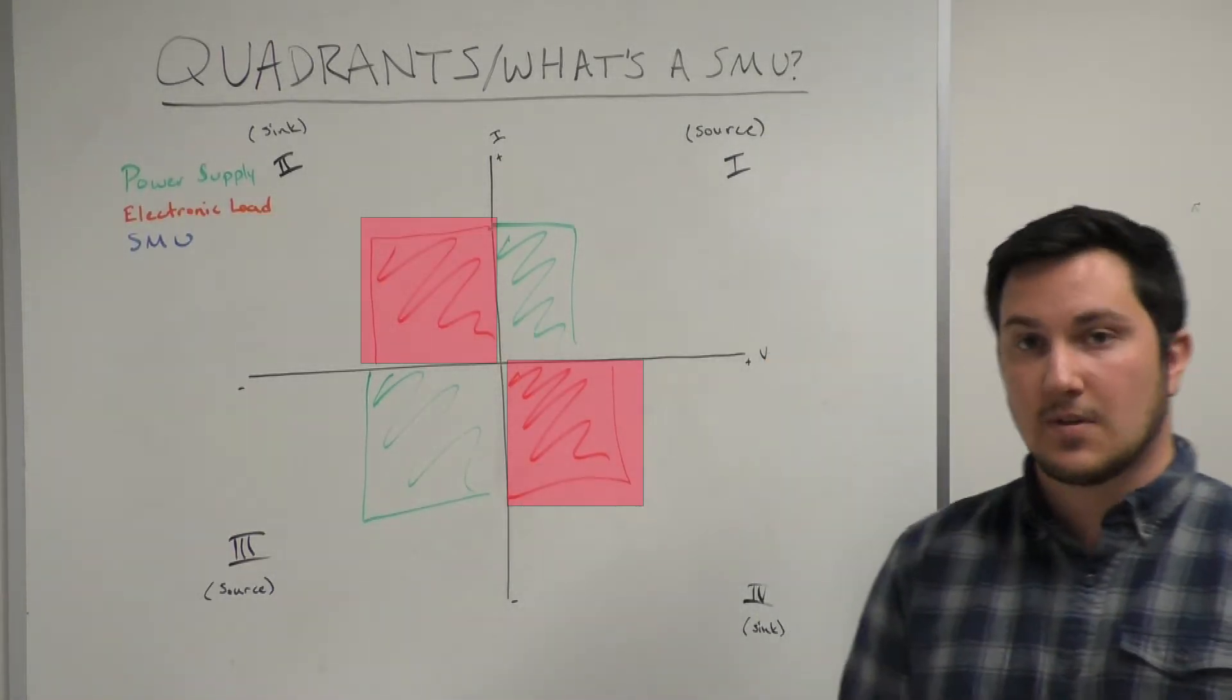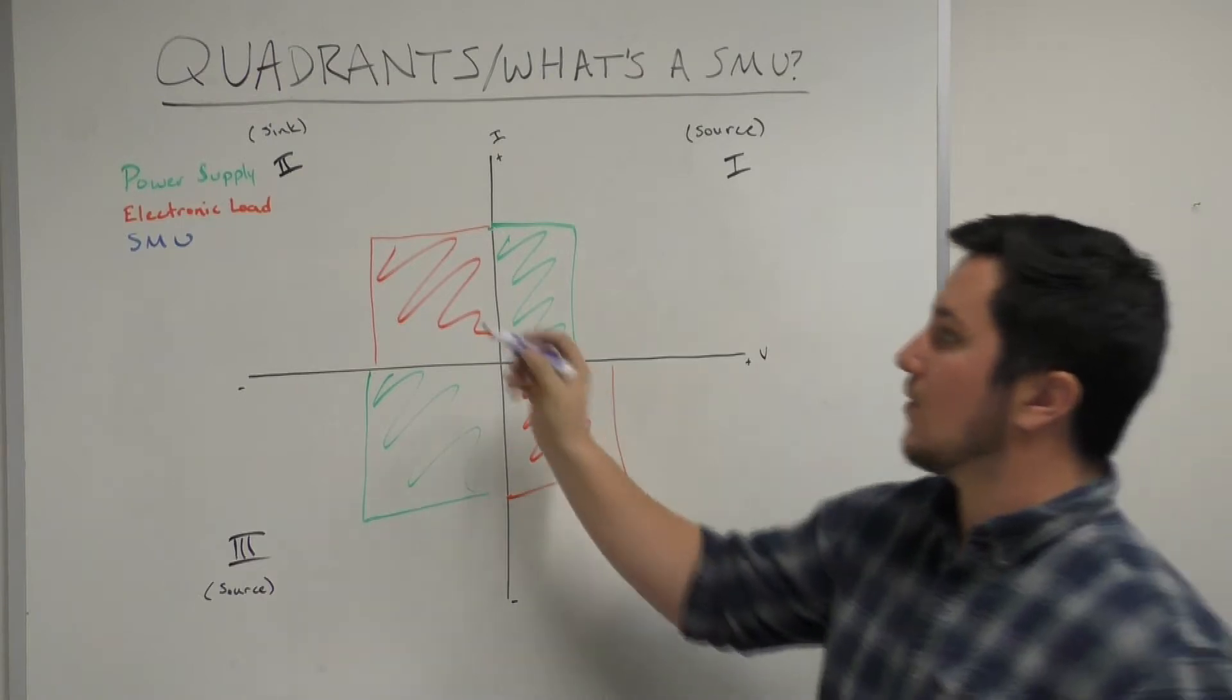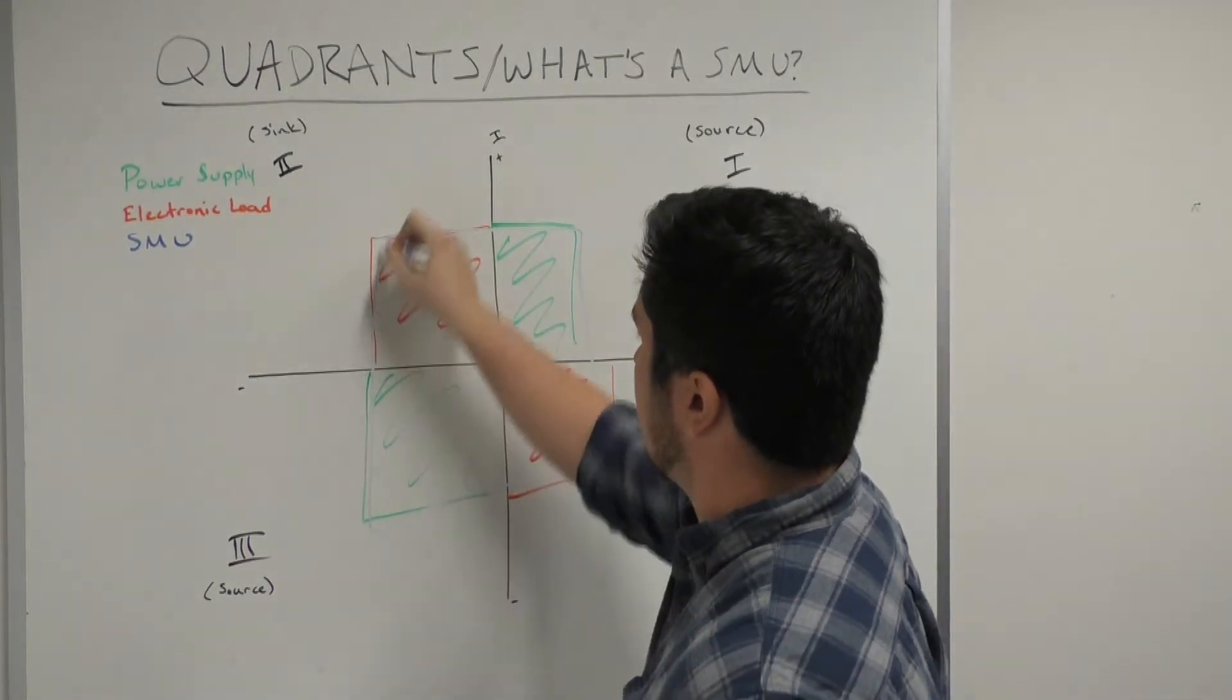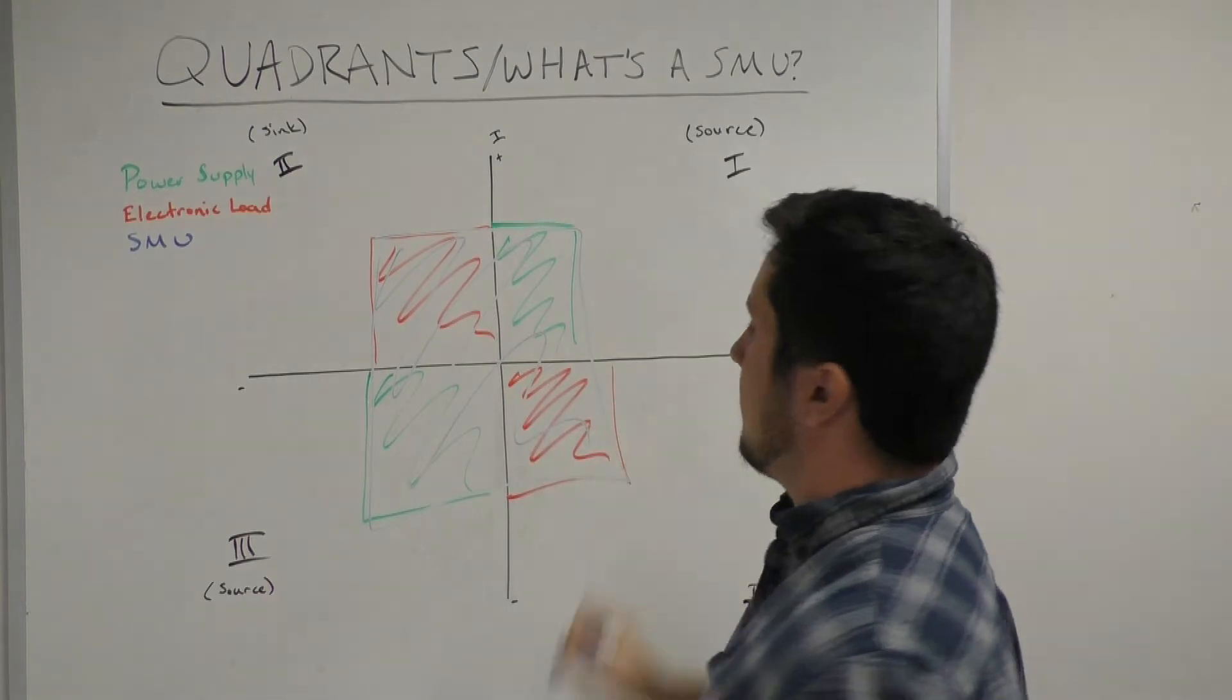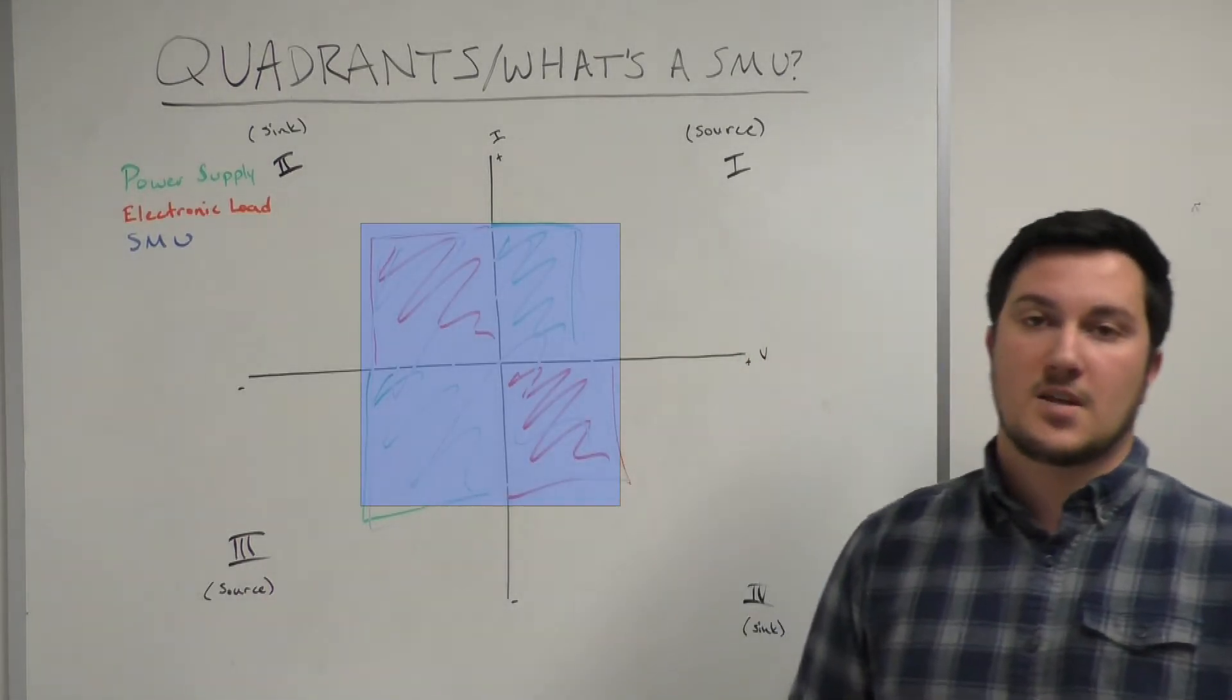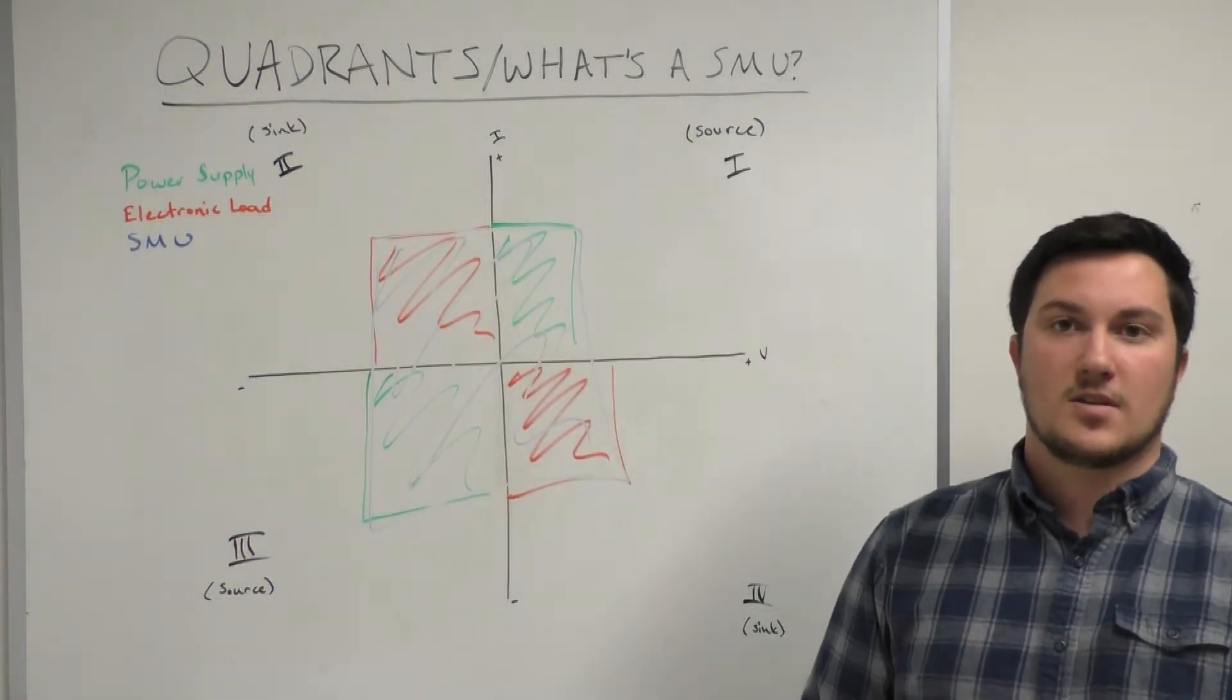An SMU typically operates in all four quadrants. It is able to both source and sink, as well as have measurement capabilities. And we're going to go a bit more into this in a moment.